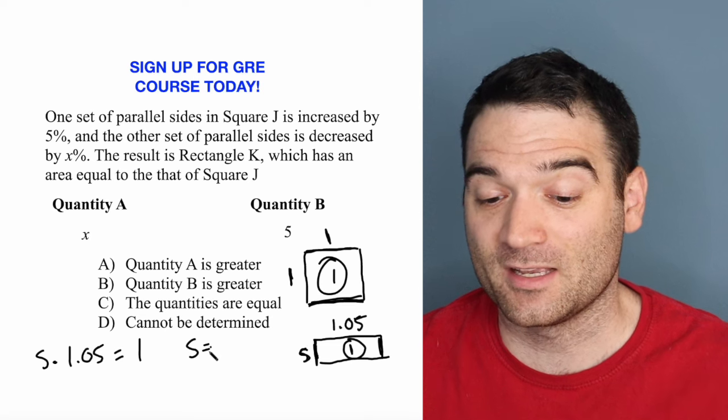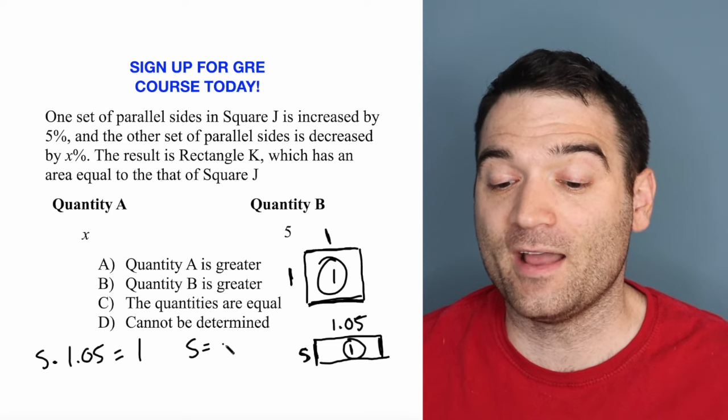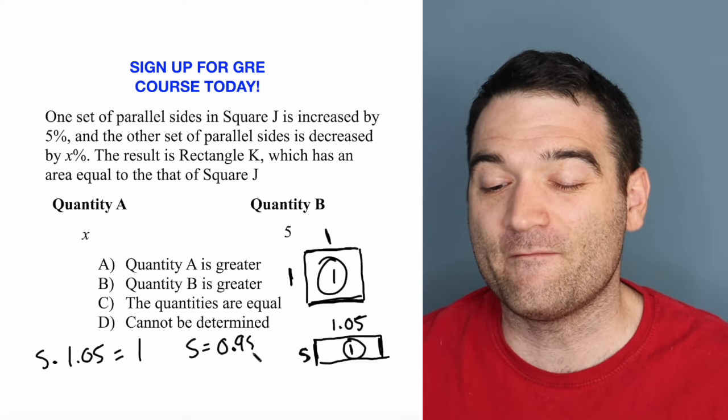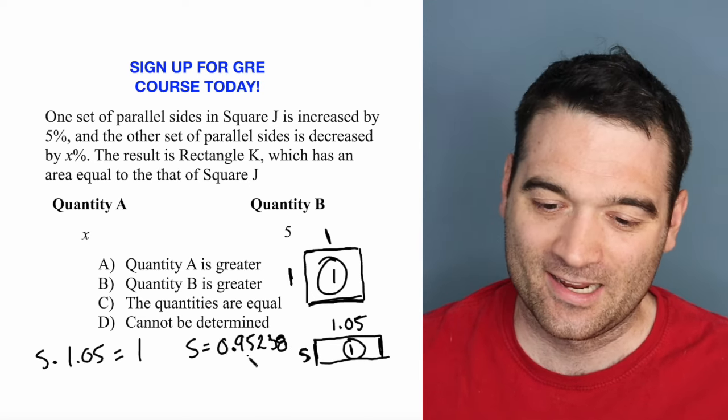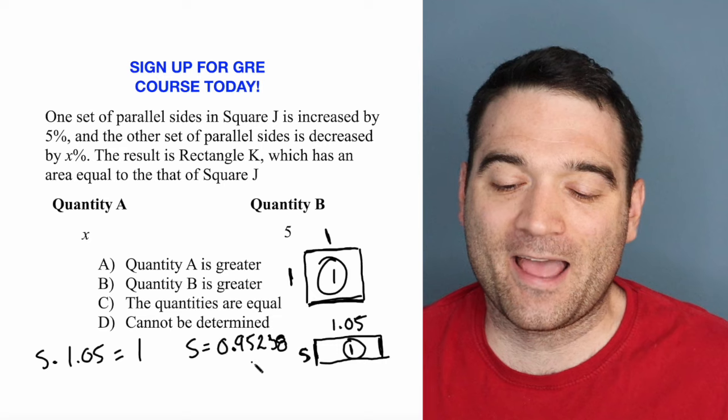What's the value of S? Well, divide both sides by 1.05, I get 0.9523, I think it's like 8 or something like that. What does that mean?